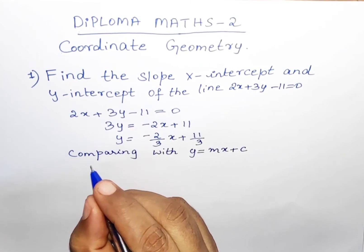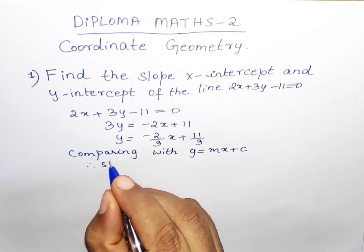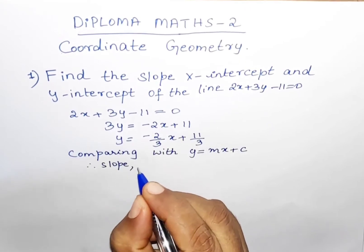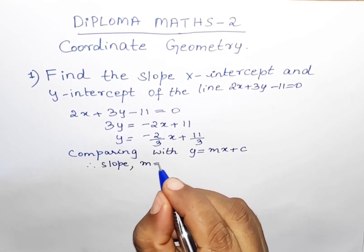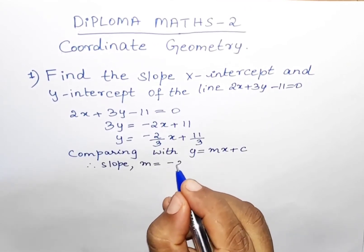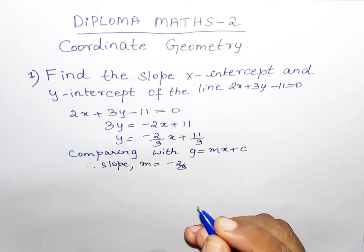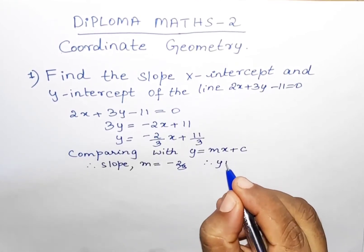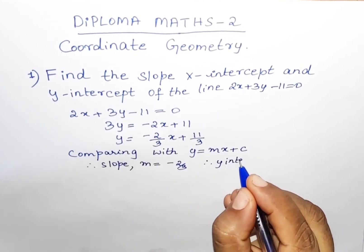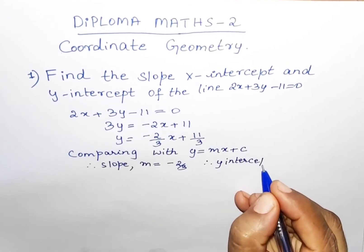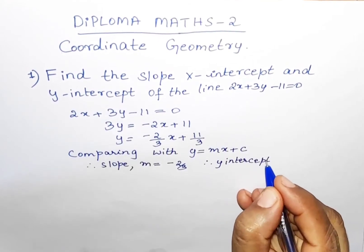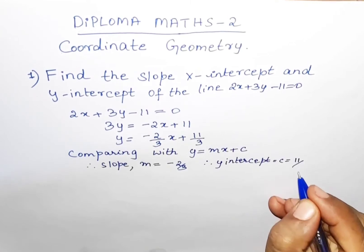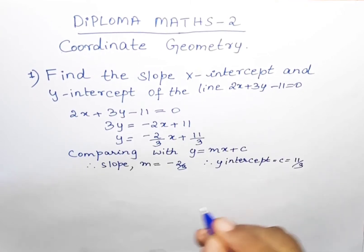Let us identify m, where m means slope. On comparing, the slope m = -2/3. The y-intercept is represented by c. So the y-intercept c = 11/3.